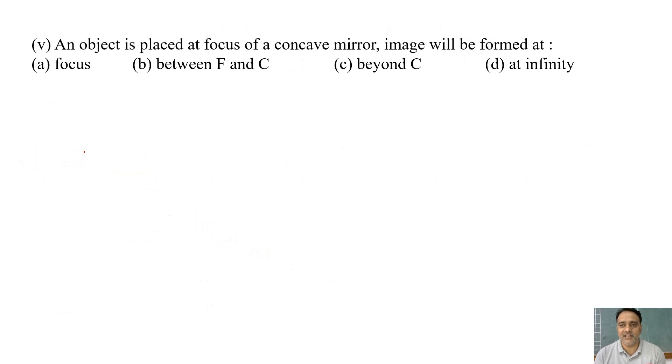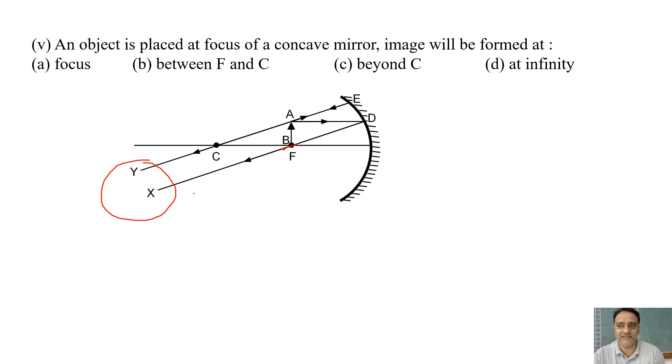So now we are moving toward the last question. An object is placed at focus of a concave mirror, the image will be formed at. Agar focus pe hum log rakhte hai, concave mirror mein, to hum log ko infinity pe milega, right? So this is the diagram, focus pe object rakhe hai, we are getting the image at infinity. So the correct option is d.